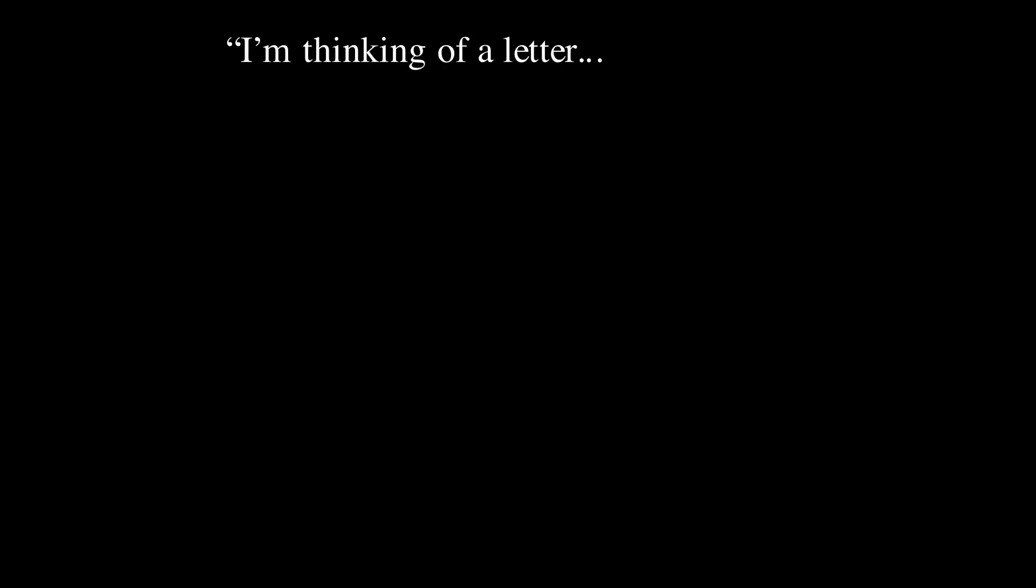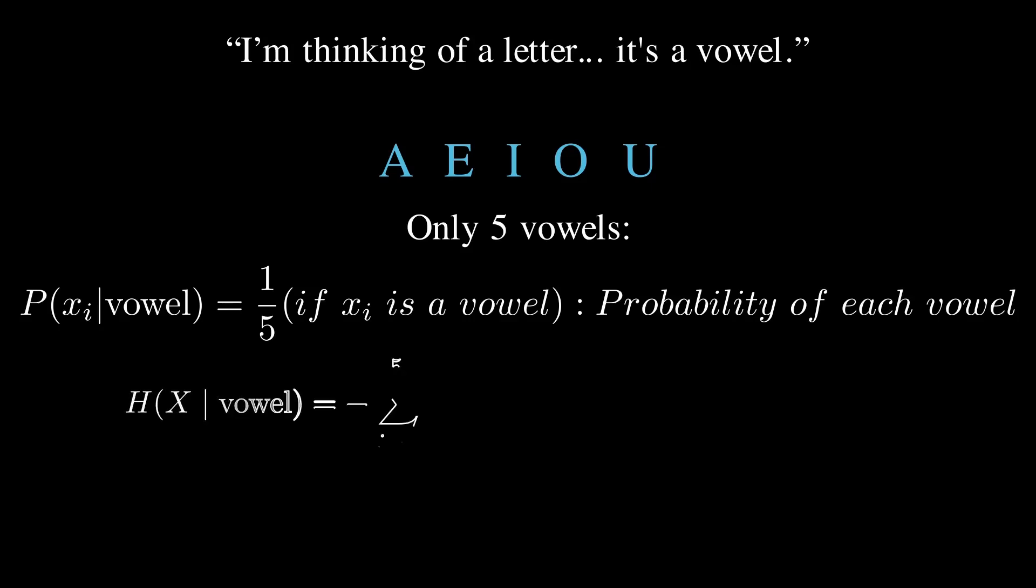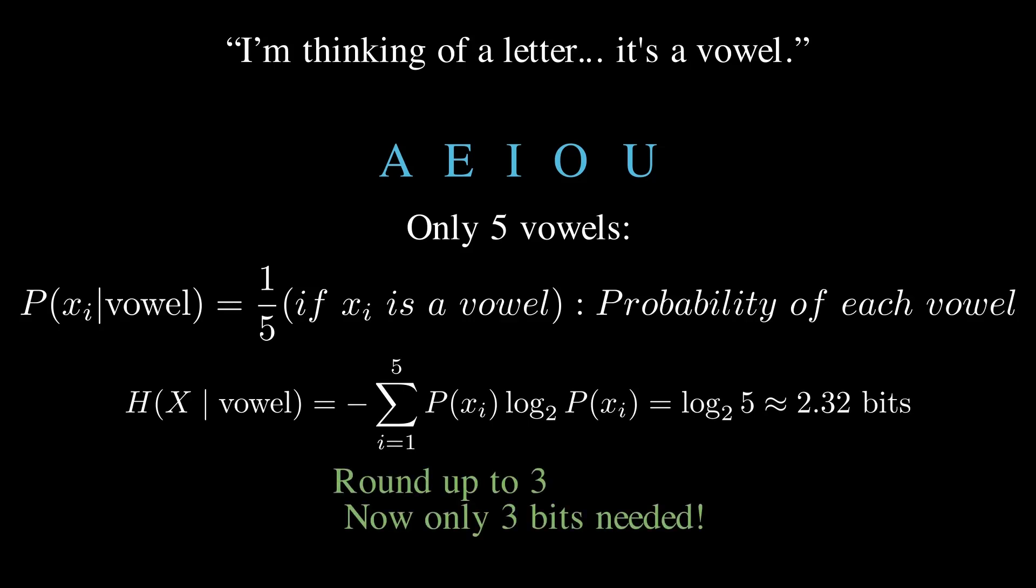Now let's try that again. But this time I tell you it's a vowel. Now your possibilities are down to A-E-I-O-U. Just 5 letters. Already this piece of knowledge feels very helpful. So now you're picking randomly from 5 options. Each vowel has probability p of x knowing that the letter is a vowel equals to 1 over 5. So the conditional entropy given that we know it's a vowel is around 2.32 bits.